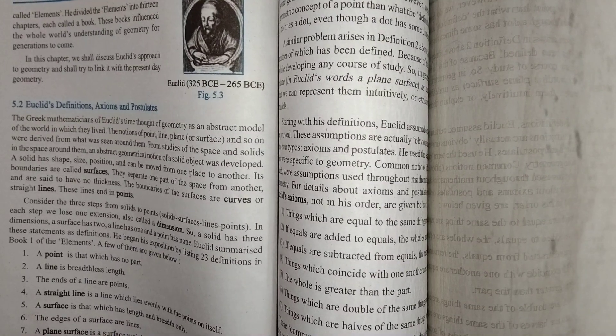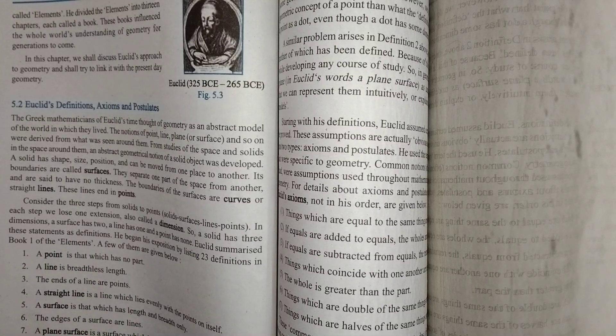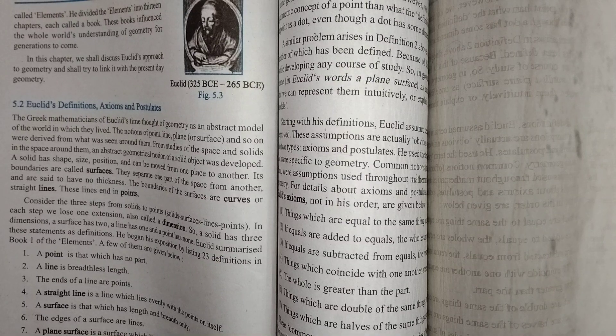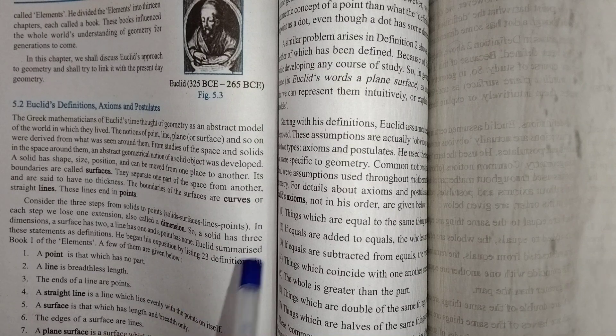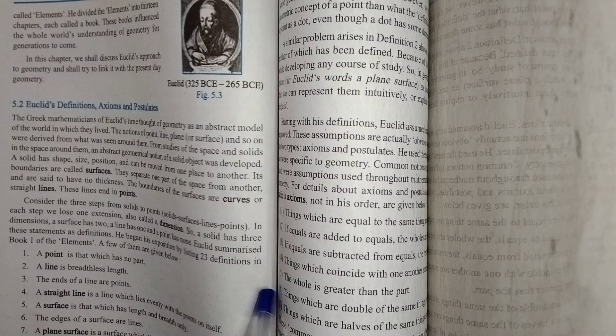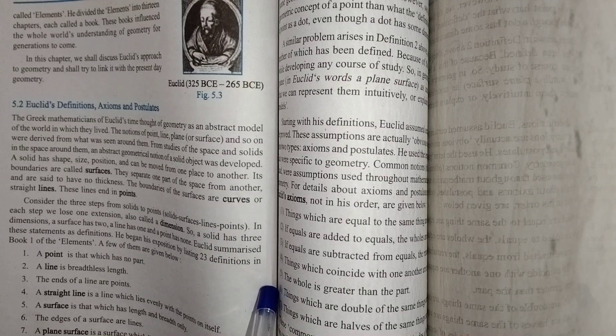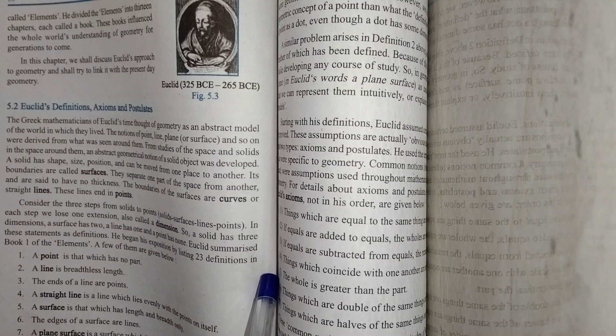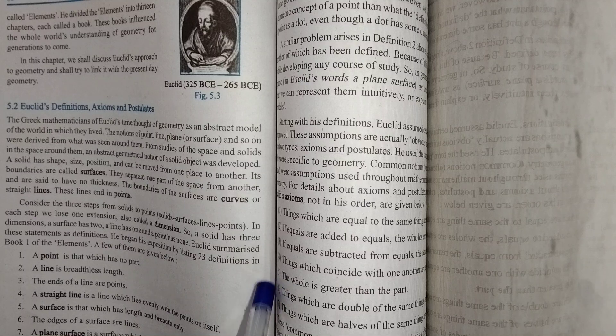A plane surface is a surface which lies evenly with straight lines on itself. These rules you need to learn. In the next part we will discuss more rules, and then we will proceed. Euclid's rules, postulates, and axioms are the most important to study. I will try to finish this chapter in the next two videos.